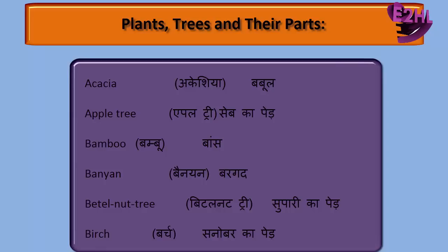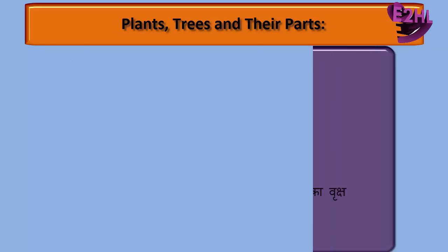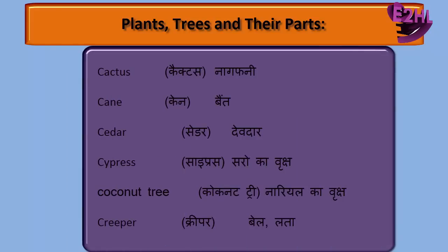Birch — Snowber Kaped. Cactus — Nagpani. Can — Bath. Cedar — Devdar. Cypress — Saru Kaped.